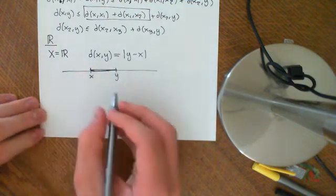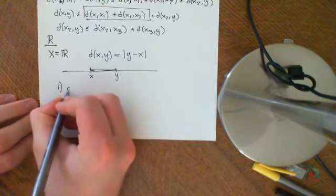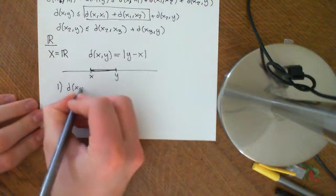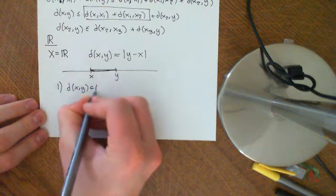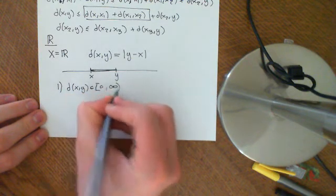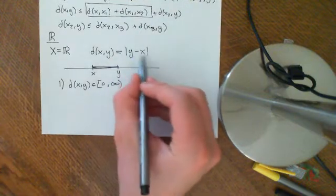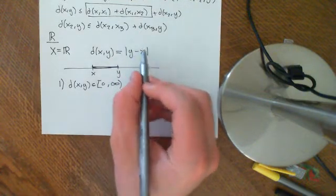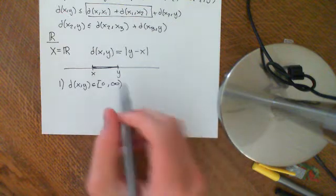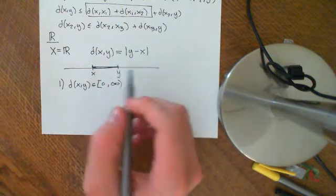Let's check if this obeys the axioms of a metric space. Number one: is d(x, y) an element of [0, ∞)? Well, that's certainly true, because this is always going to be a positive number and it's always going to be finite. You give me any two real numbers, this is never going to be plus infinity, and it's never going to be negative either.